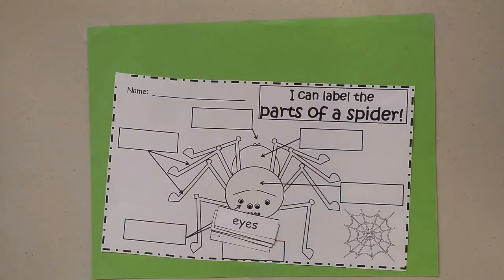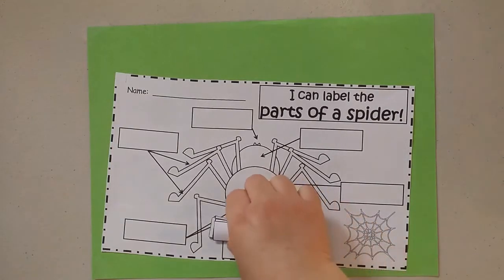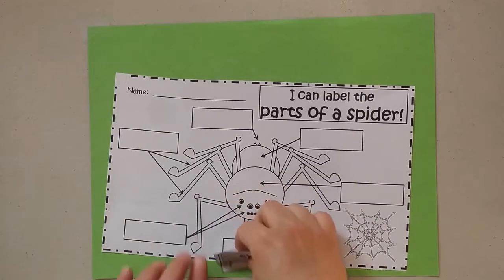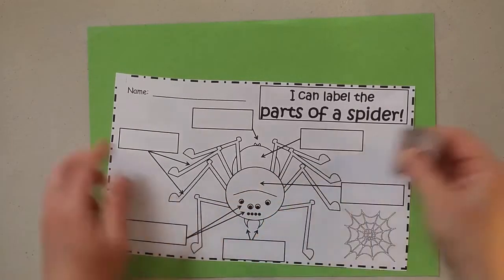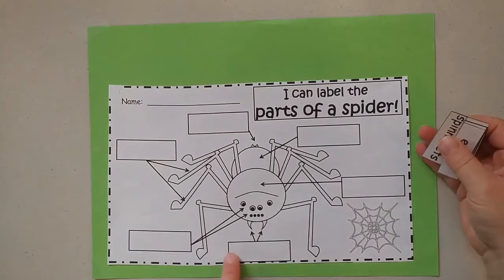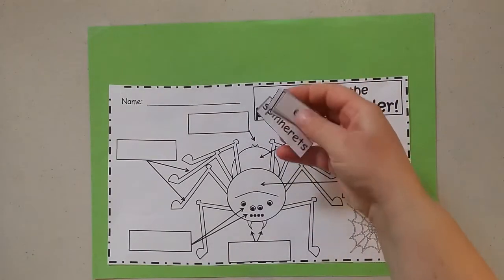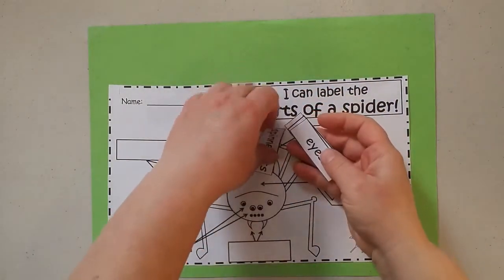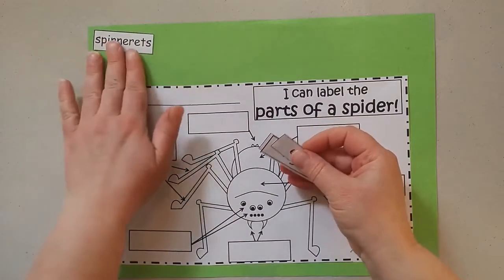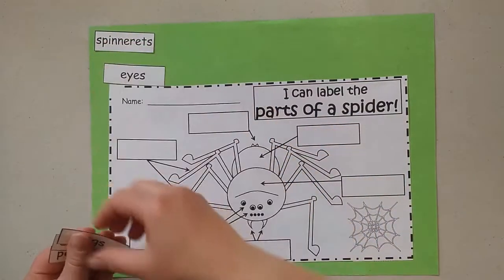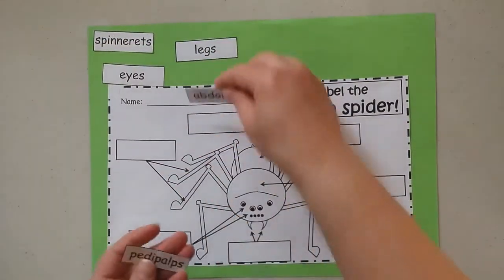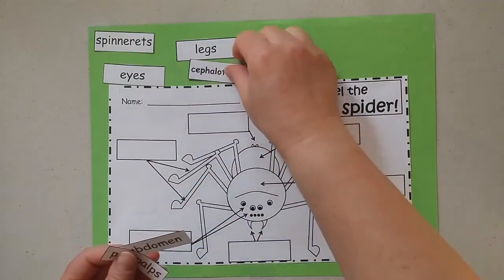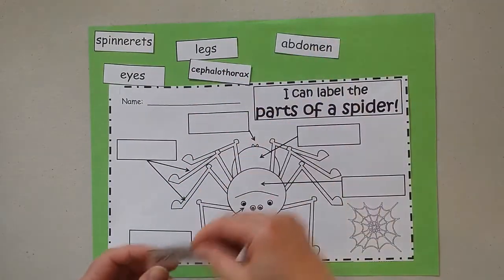Okay, now it is time for us to do our spider activity. So you have a spider paper like this and then you have a packet of six labels. Grab your packet of labels and spread them out so that you can see them. Count them to make sure you've got them all.